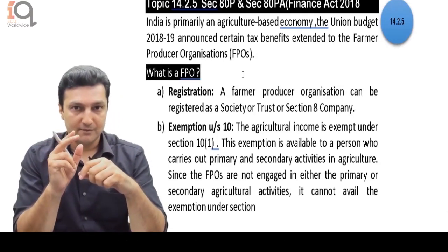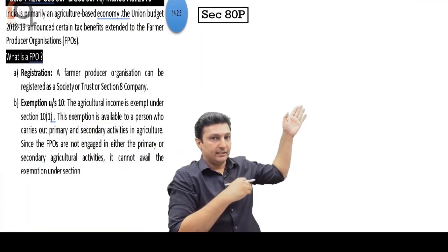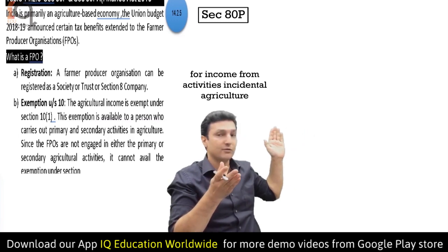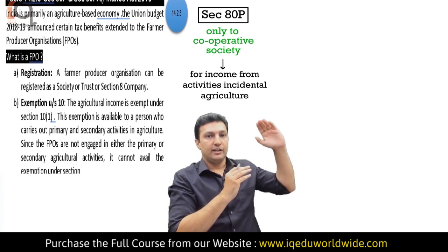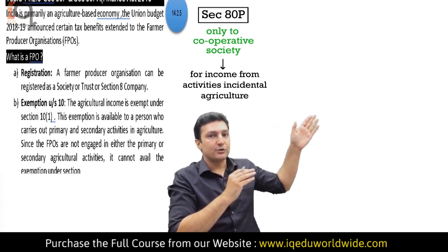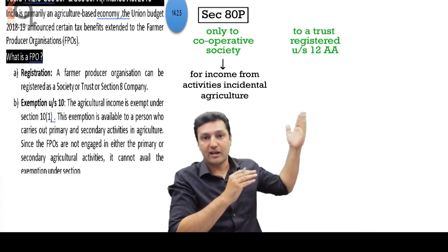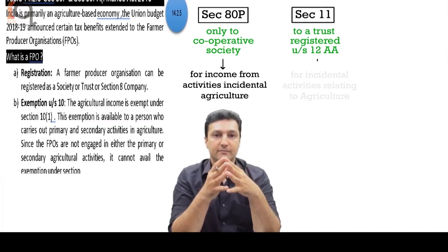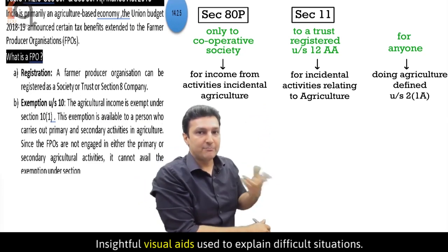Section ATP was giving a deduction to incidental activities relating to agriculture, but this deduction was available only to a cooperative society. If the incidental operations society was registered as a trust and registered under section 12AA, they could have claimed a deduction or exemption under section 11. People who are directly into agriculture can claim an exemption under section 10.